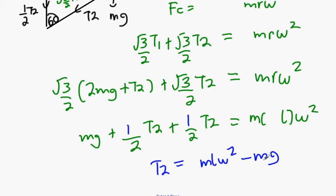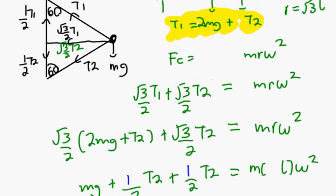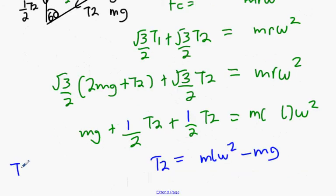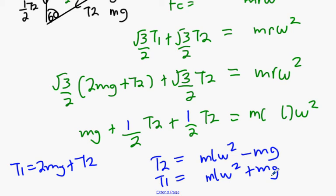Find T1. We have something for T1 up here, don't we? T1 equals 2mg plus T2. So T1, it's just an extra 2mg added on to the end. Which you'll get us what, guys? mL omega squared plus mg. That went for 20 marks.